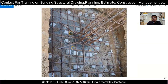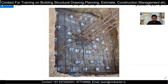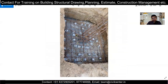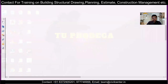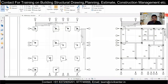After the footing reinforcement is placed with cover blocks, we place our columns. When placing the columns, we have the development length of the column. For students and fresher site engineers, we have provided a development length of 300 mm and 350 mm in some places at the footing-column intersection. After that, you can go for the shuttering and then for the casting.